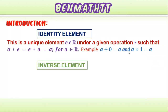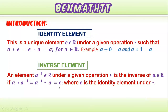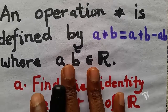When we pick any element a-inverse from R, under a given operation, we say it is the inverse of a. When you operate a on its inverse, you get the identity element e. Always remember that we use e to represent the identity element.